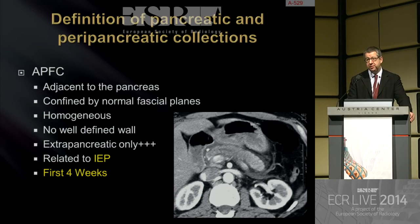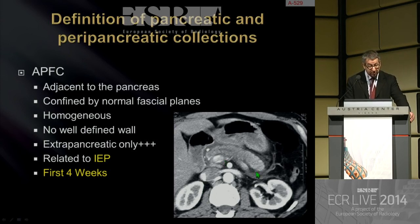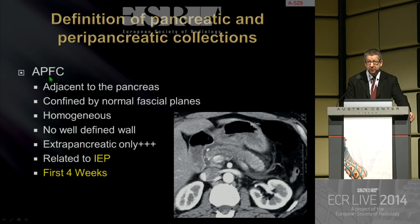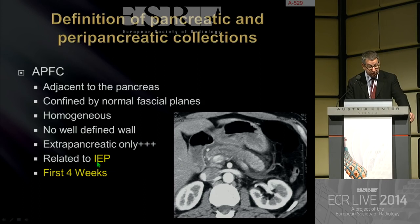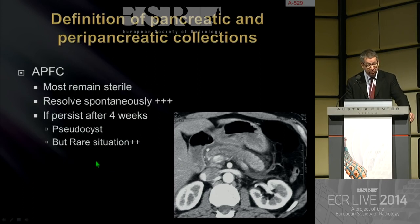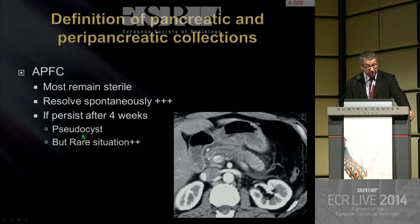APFC are supposed to be adjacent to the pancreas, seen with fluid density and homogeneous content, and confined by normal fascial planes — in particular by the anterior pararenal fascia. They have no well-defined wall, and they are extrapancreatic only. If you see lack of enhancement inside the pancreatic parenchyma, it is not APFC — it will be ANC, acute necrotic collection. Most APFC will remain sterile and resolve spontaneously. Only very few will evolve to a pancreatic pseudocyst.